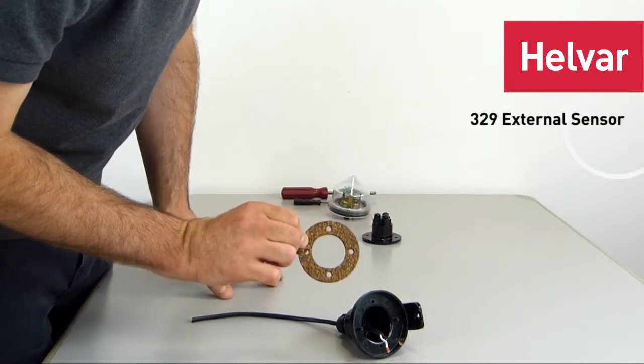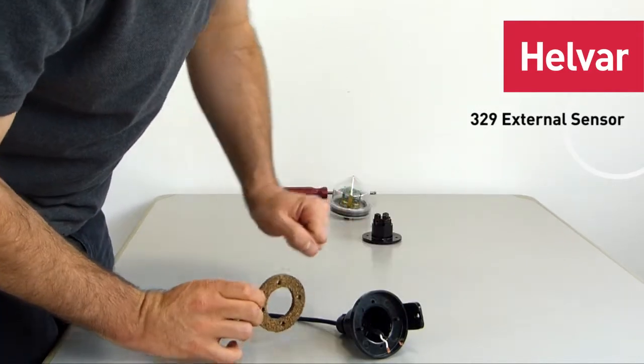We're going to put the cork sealing gasket on now. And you can see there are two guide pins there. Put that over.